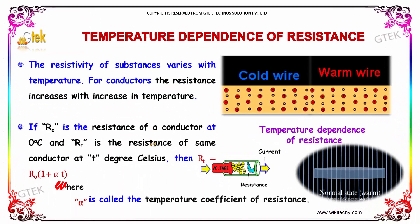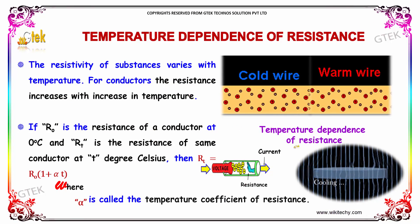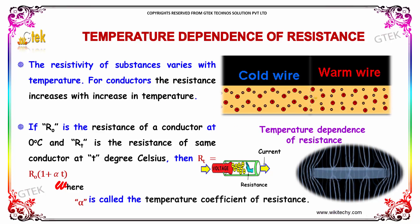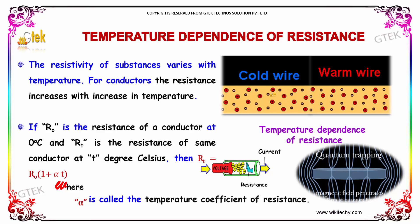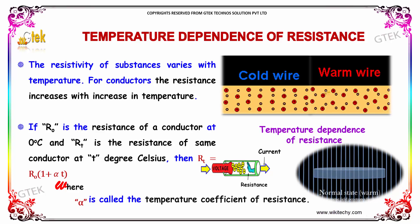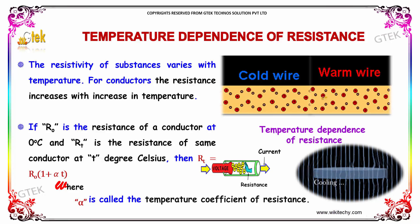If we talk about temperature dependence of resistance, the resistivity of the substance varies with the temperature — you can see it. We are able to see the difference between the resistivity. For conductors, the resistance increases with the increase in temperature.